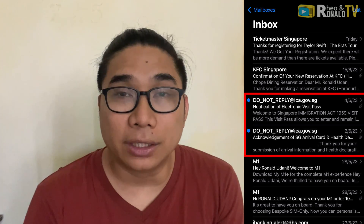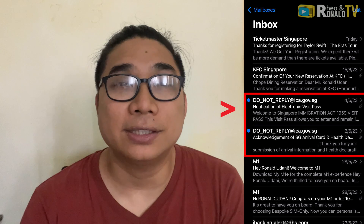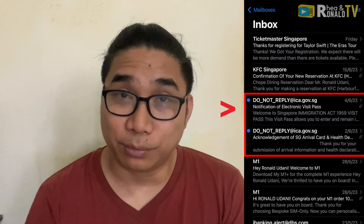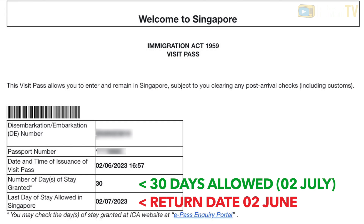You will receive two emails in total. The first is an acknowledgement email from ICA. Once you arrive in Singapore, after about one to one and a half days you will receive the second email: 'Welcome to Singapore.' As a tourist, even if your return ticket is for next week, you are granted 30 days of stay in Singapore.